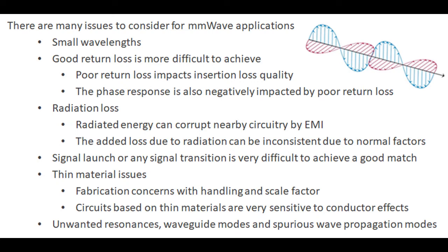Thin materials are used for several different reasons in millimeter wave, but you do have different things to think about. On the fabrication side, thinner materials are a little more problematic when building a circuit — you have more damage with handling. Also the scale factor, which is how much the material will grow or shrink going through different processes in circuit fabrication, is increased with thinner materials. Circuits based on thin materials are also more sensitive to conductor effects such as copper surface roughness. And finally, unwanted resonances and spurious modes can be an issue.